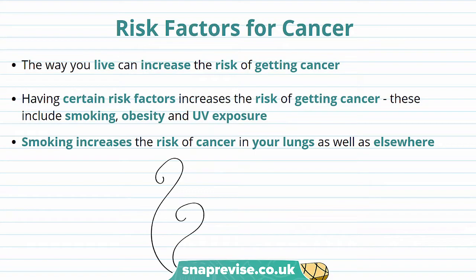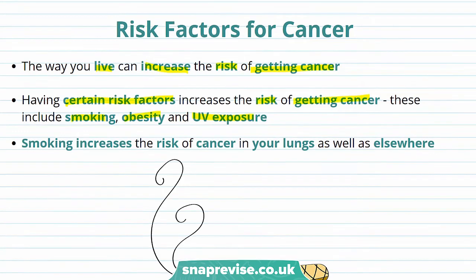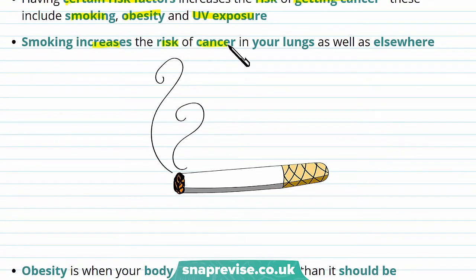Scientists have now discovered some of the risk factors for cancer. They've found that the way you live can actually increase the risk of getting cancer. These risk factors include smoking, obesity, and UV exposure. Smoking increases the risk of cancer, especially in your lungs, but also in other areas such as your mouth or your stomach, because cigarettes contain chemicals that make it more likely to get cancer.